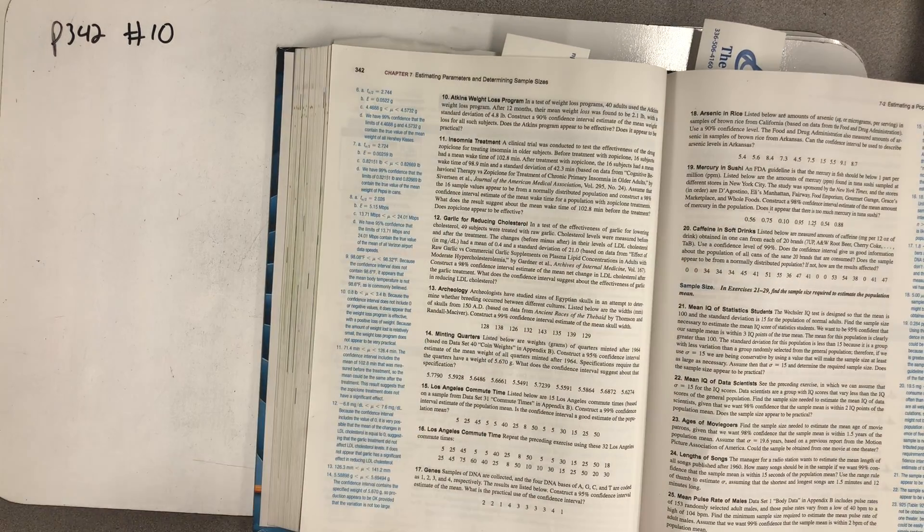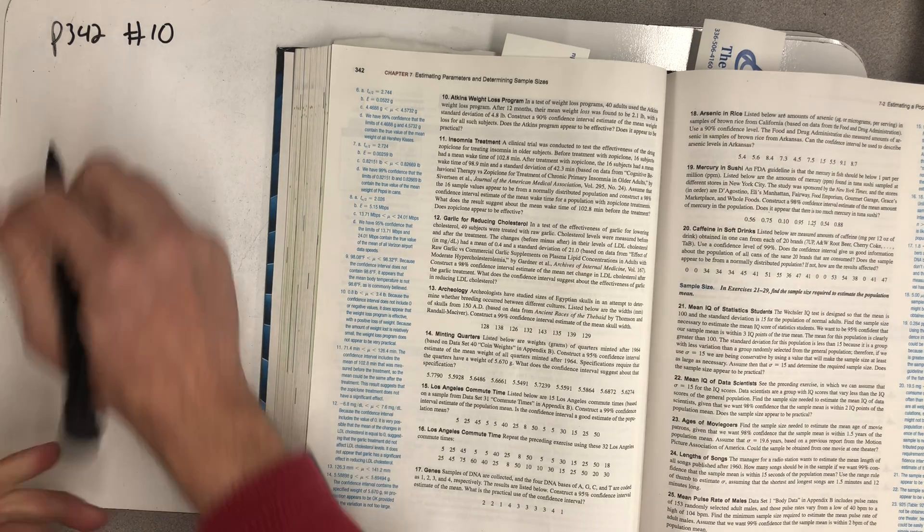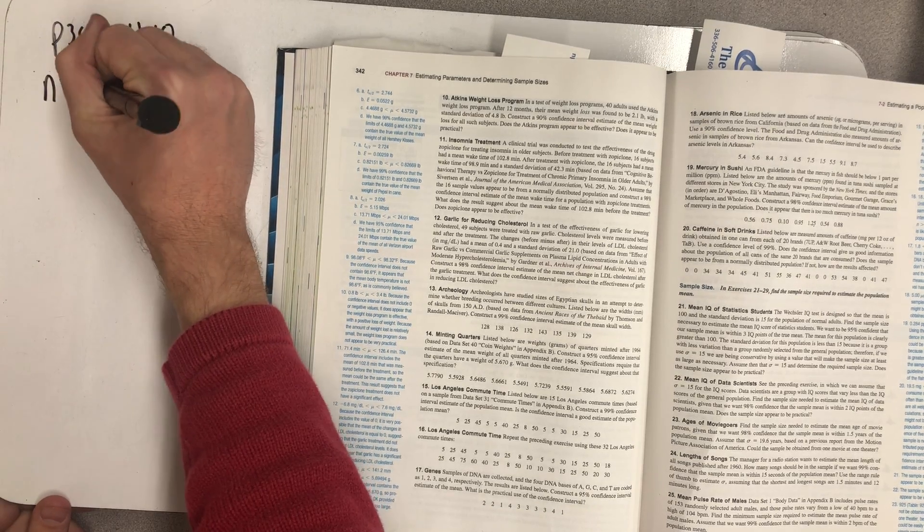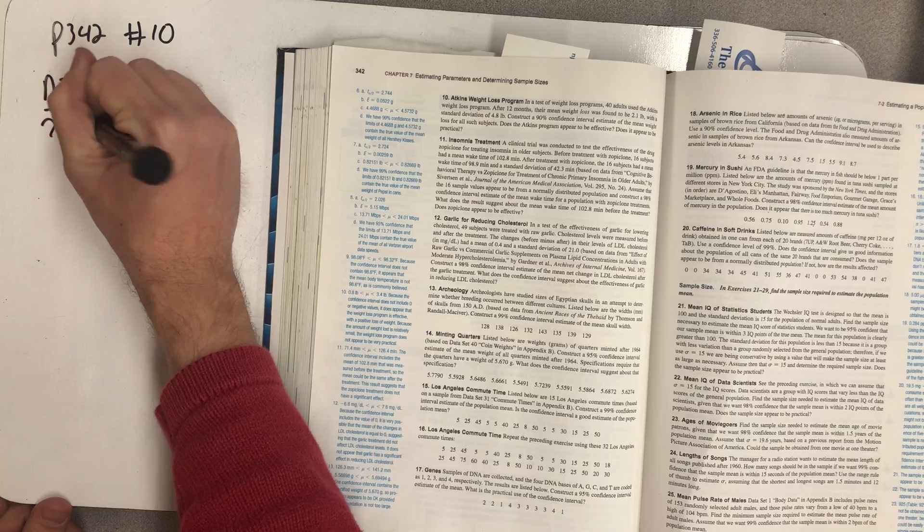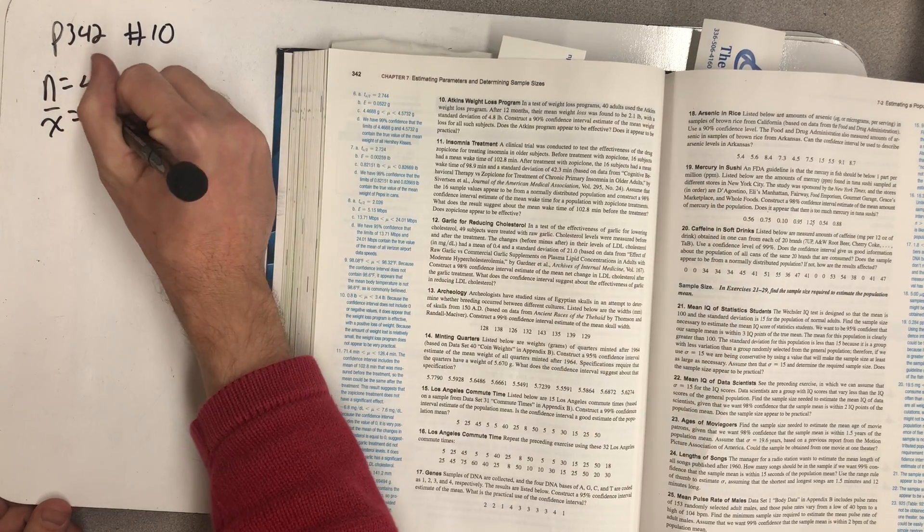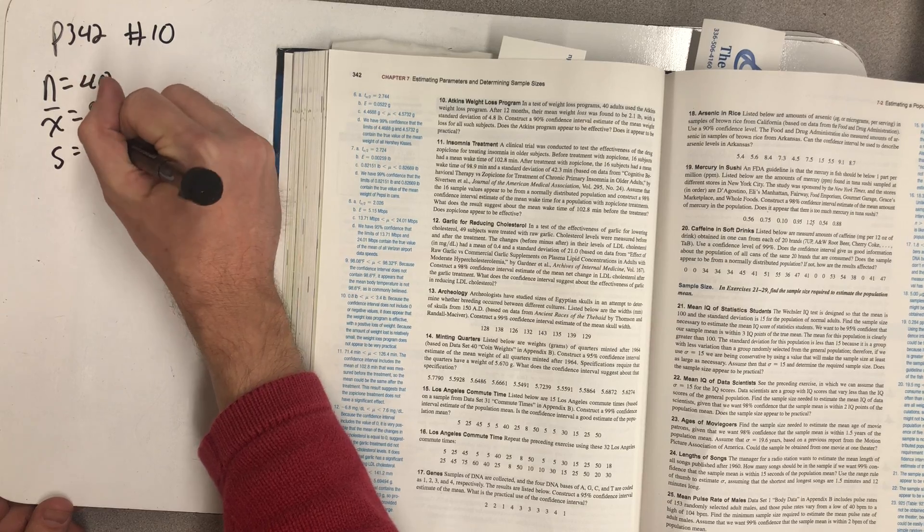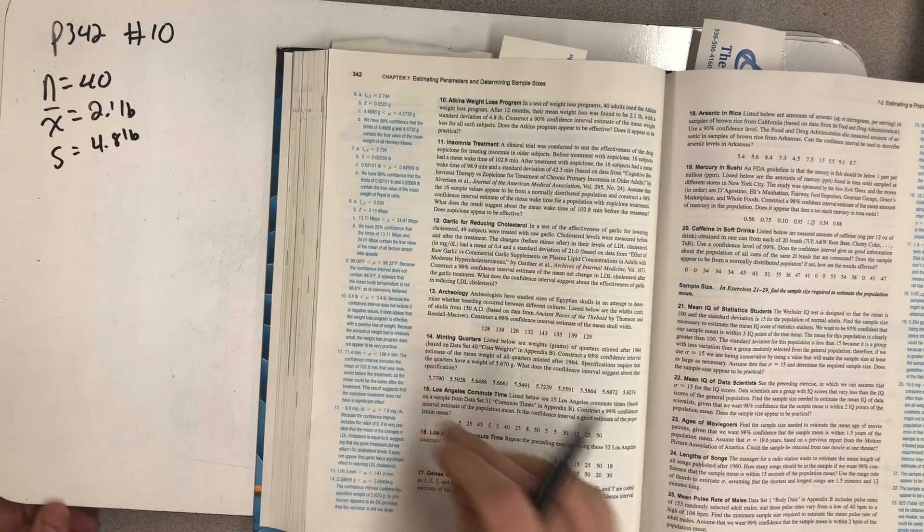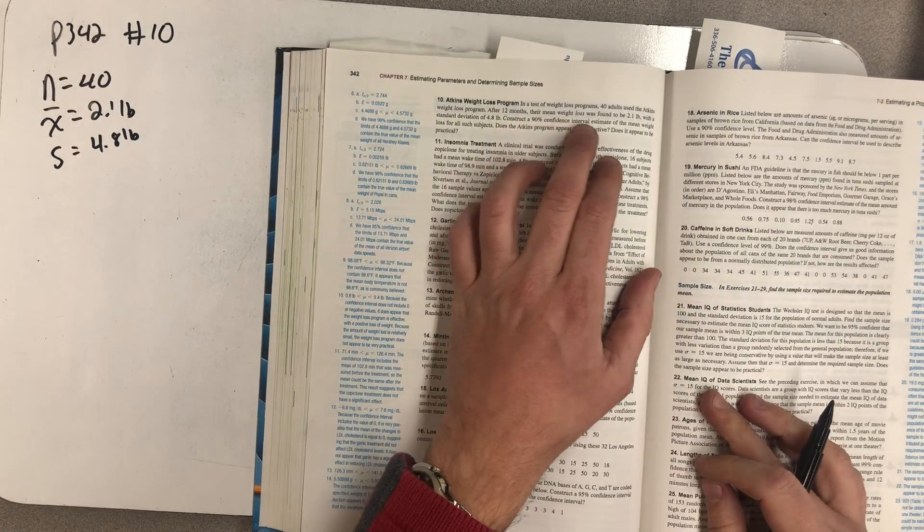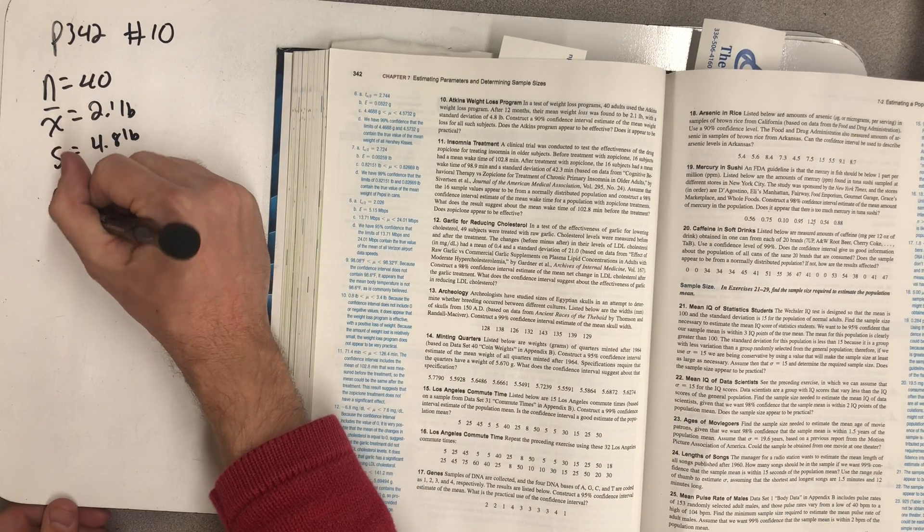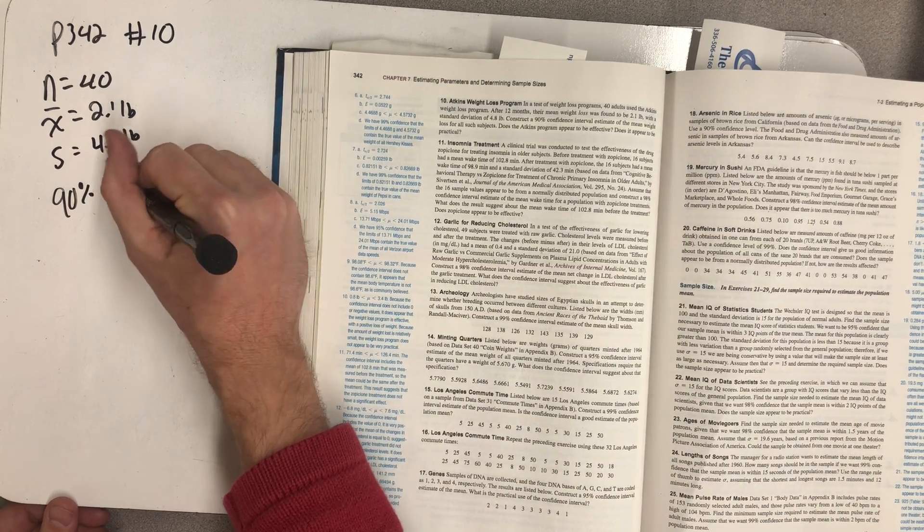Let's just pause there and summarize the information we'll need to know. So I have a sample size, I had 40 adults. I have a sample mean of 2.1 pounds, a sample standard deviation of 4.8 pounds, and we're asked to construct a 90% confidence interval. So 90% and that would make alpha 0.1.